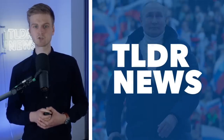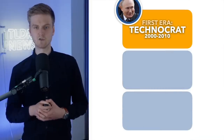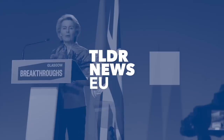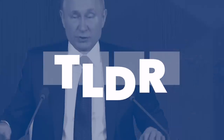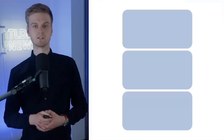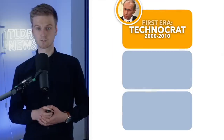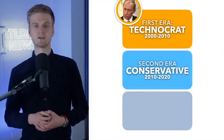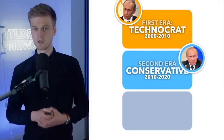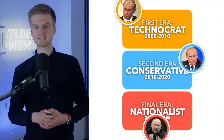So in this video, we're going to try our best to trace back Putin's politics, starting from when he first came to power in 2000, and try to explain how we, and he, got here. We're going to split Putin's politics into three areas. The first is the technocratic era, which lasts roughly from 2000 until 2010. The second is the conservative era, which lasts roughly from 2010 until 2020. The third and final era is the nationalist era, which roughly begins in 2020 and is ongoing today.